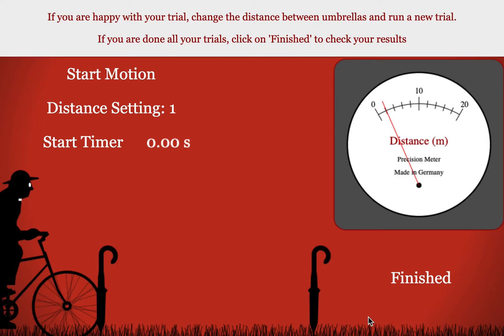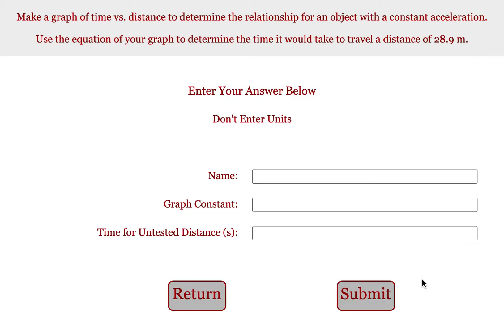Once you have your graph completed, hit your finish button. Put in your name. Put in your graph constant. Then it's going to ask you to use your equation to determine the time it would take to travel a distance of 28.9 meters. So put that distance into your equation. Plug it in here once you get your answer. And submit to see how you do.